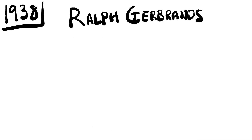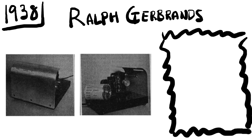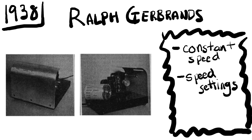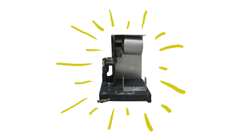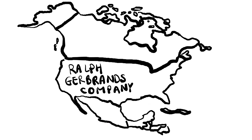In 1938, Ralph Goebrands at Harvard University improved the memory drum even further by replacing the spring motor with an electric motor and implementing movable pins to control the speed of the drum. The memory drum now had all the necessary features to conduct reliable memory experiments: constant speed, different speed settings, and an electric motor. This model was the one used most widely across America, distributed by the Ralph Goebrands Company.